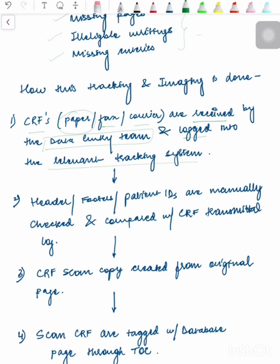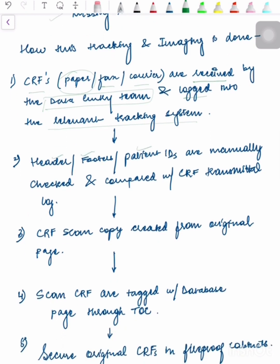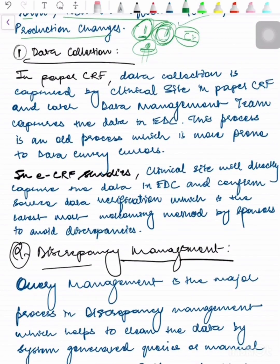After logging it into the relevant tracking system, the header, footer, and patient IDs are manually checked and compared with the CRF transmittal log. In the previous lecture we learned about the transmittal log.